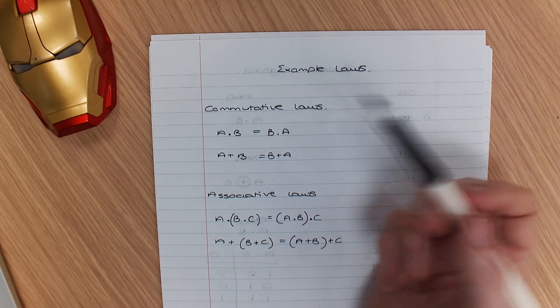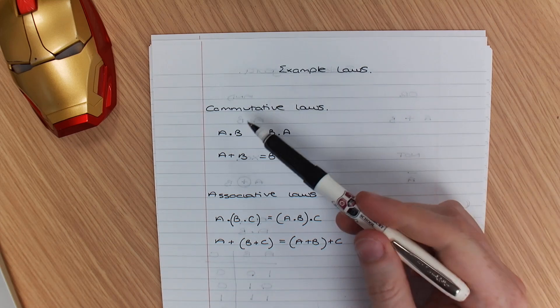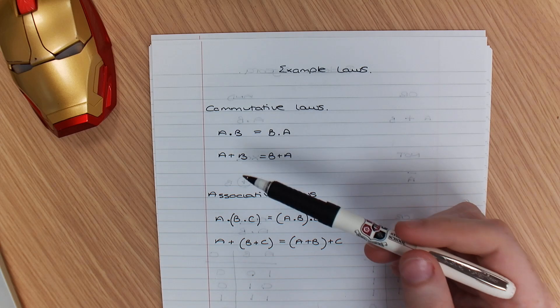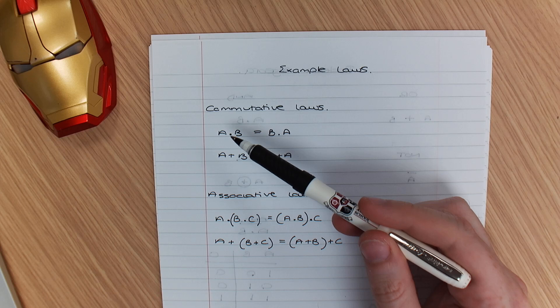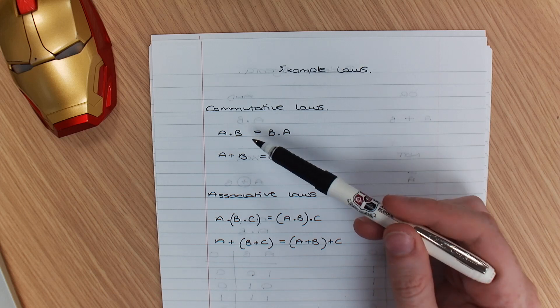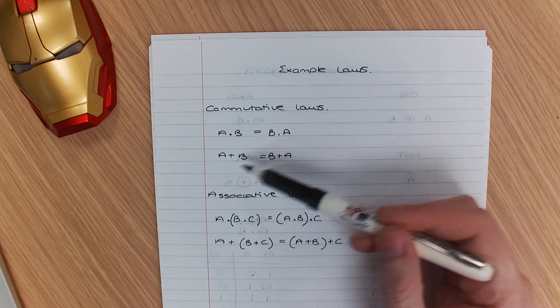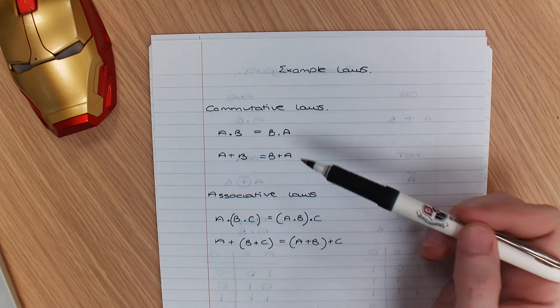Now, one thing about working with Boolean algebra is that you need to think about the commutative laws. What this is saying here, for example, is if you've got A and B, then it is the same as B and A. If you've got A or B, it's the same as B or A.